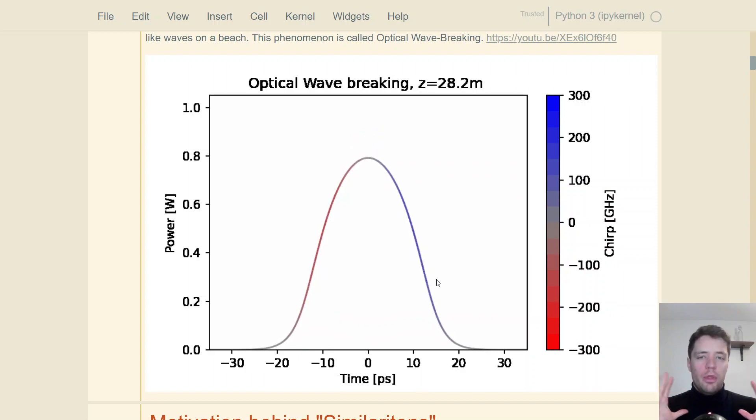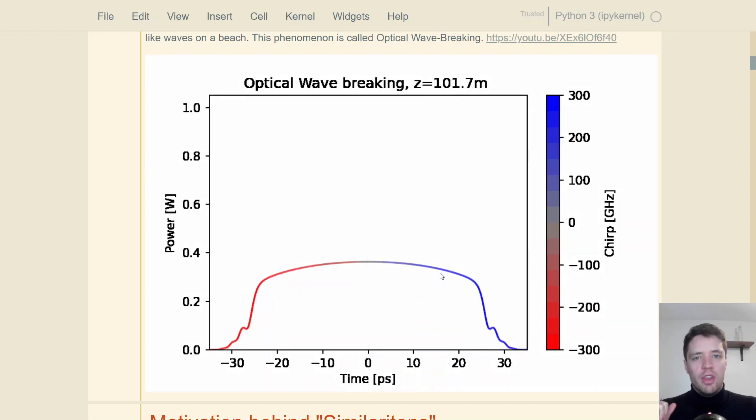So it turns out that for the case of the beta-2 being positive, we don't get this kind of stable configuration unless the attenuation parameter is actually positive, meaning that we have gain in the medium. So in other words, if we have a fiber with positive beta-2, a nonlinearity, but also positive gain, we can get something called a similariton, which is what we're going to be discussing today.